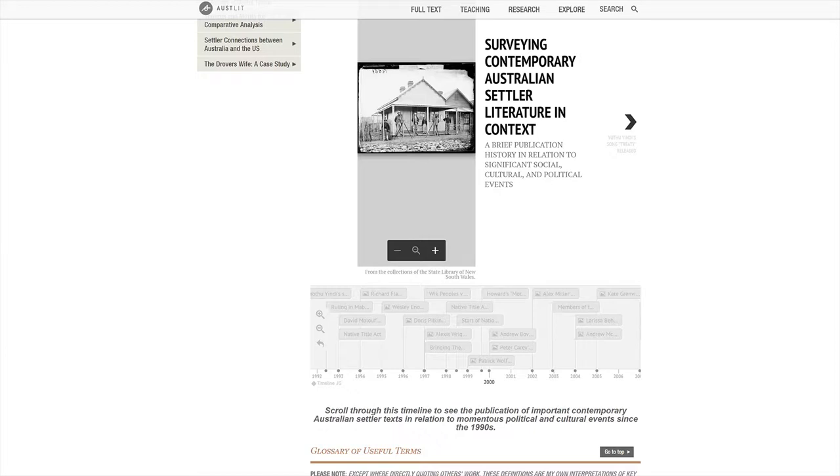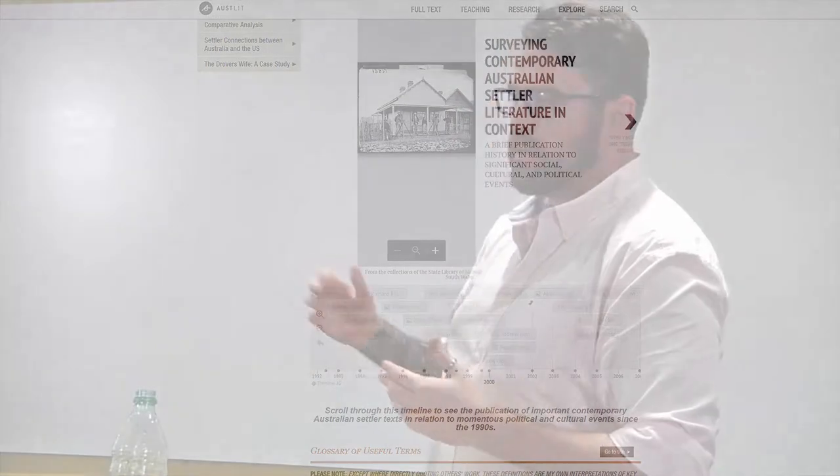So one of the questions that kept coming up is how are you going to define contemporary? Because it's contemporary settler literature. How do you define contemporary? Define contemporary. And so I made this slideshow that puts several of these works in chronological contexts with major events that are happening in policy and aboriginal culture and settler culture. Right. So it's just a timeline.